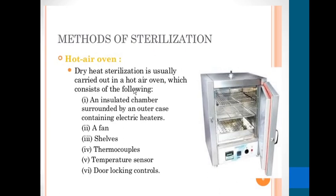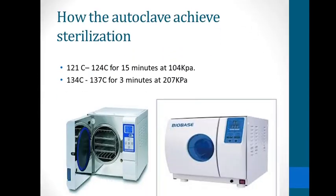Dry heat sterilization is usually carried out in a hot air oven, which consists of the following components: an insulated chamber surrounded by an outer case containing electric heaters, a fan, shelves, thermocouples, a temperature sensor, and door locking controls.